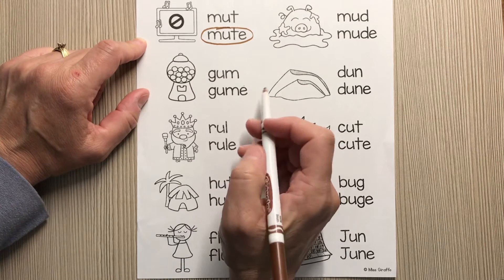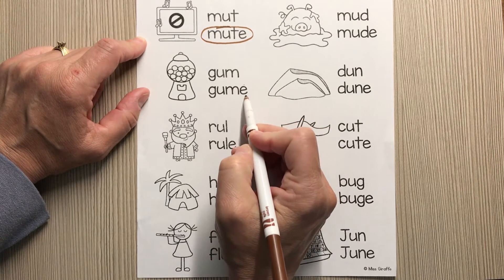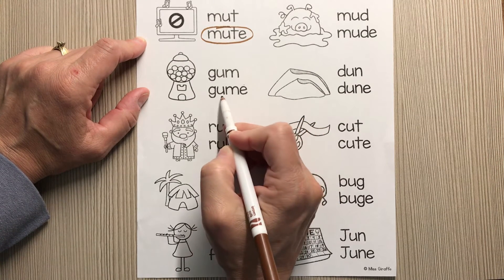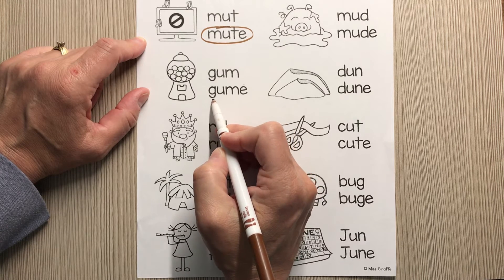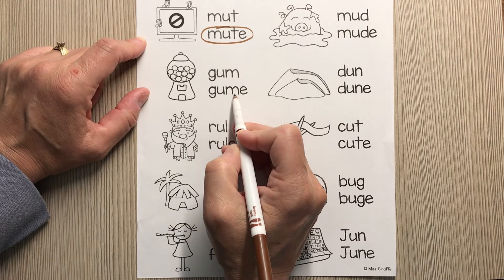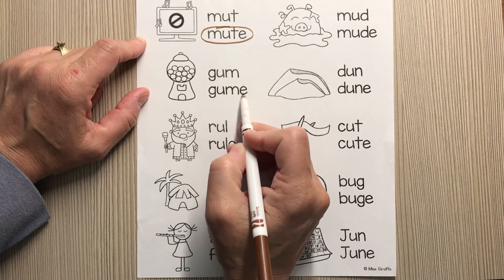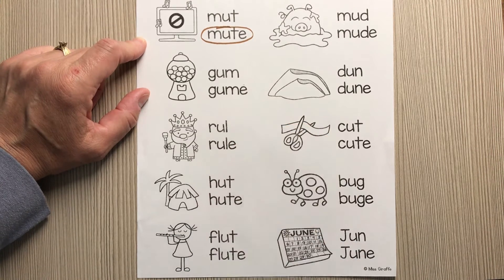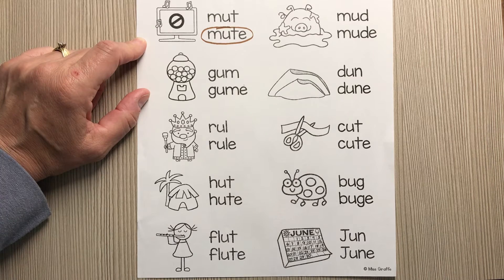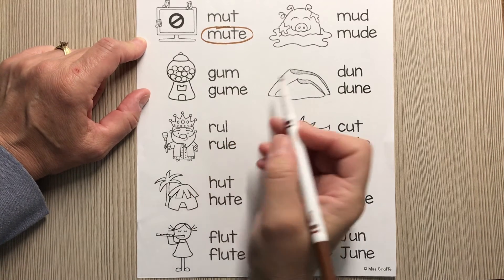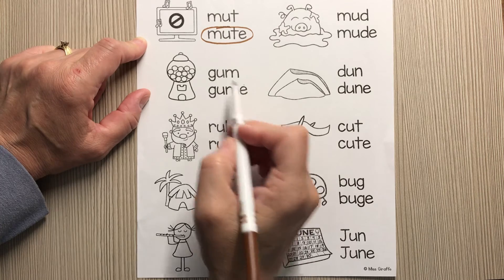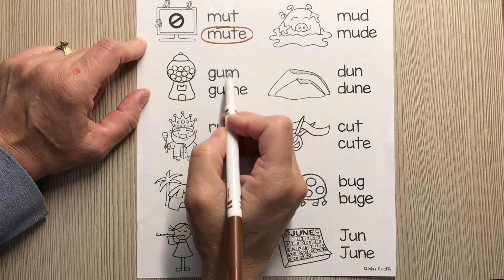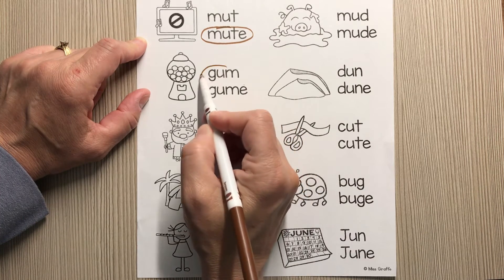But let's check this one just in case. Here we have silent E — it tells the U to say 'you.' So 'gume.' Do you know what 'gume' is? I don't know either. I think that's a make-believe word that we just read. So we don't want 'gume.' We want 'gum.' Circle your word 'gum.'